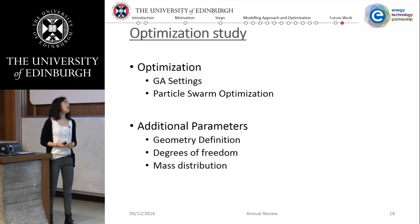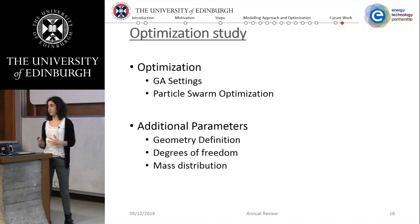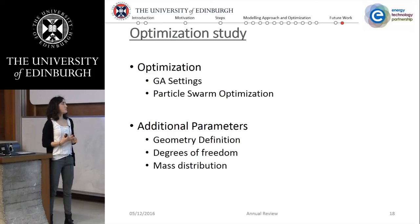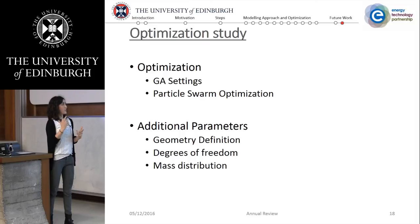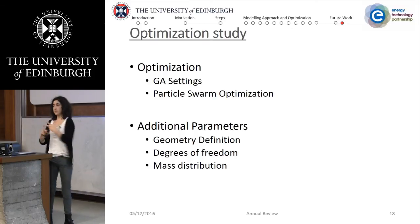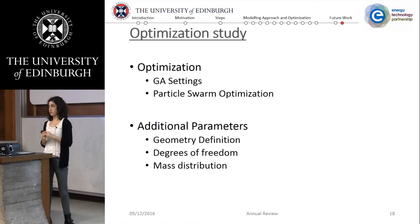The next steps are to change the GA settings to see how performance can be improved and whether we can converge to a global maximum instead of a local one. Then to implement particle swarm optimization and compare both optimization processes, and to look at additional parameters such as geometry definition, varying the degrees of freedom, and examining the effect of mass distribution on the geometry. Thank you very much — any questions?